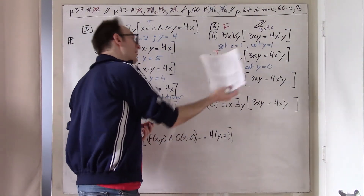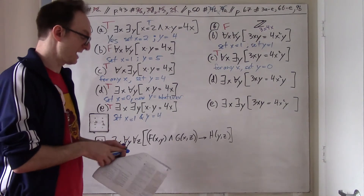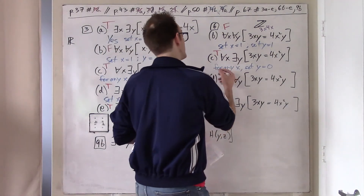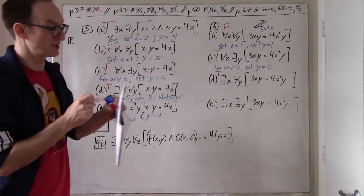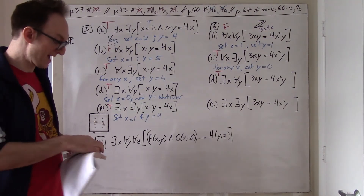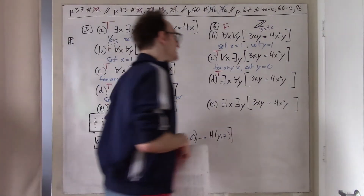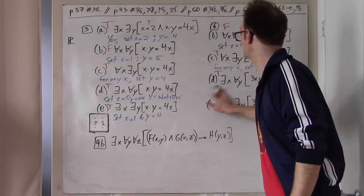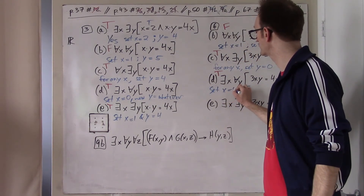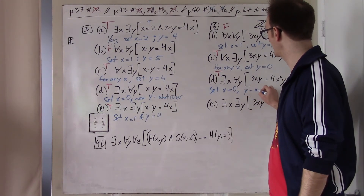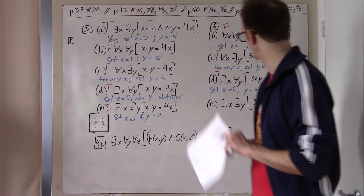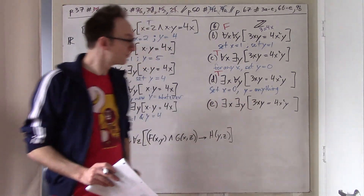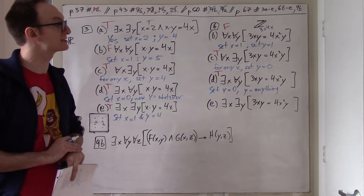Part D (integers): There exists an X such that for all Y, 3XY = 4X. This sentence is also true. Set X = 0. Then for any Y, 3·0·Y = 0 and 4·0 = 0, so the sentence is automatically true regardless of Y. Therefore there does exist an X — specifically X = 0 — for which this holds for any Y.